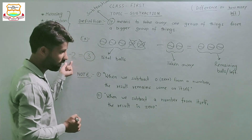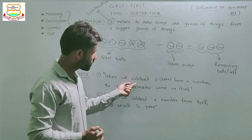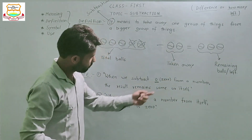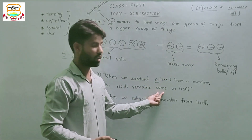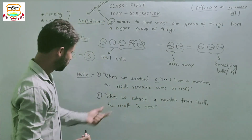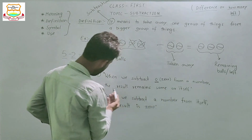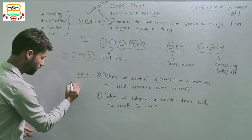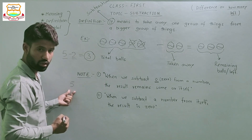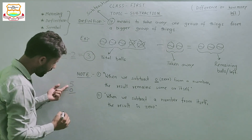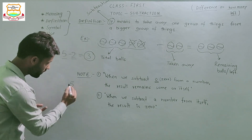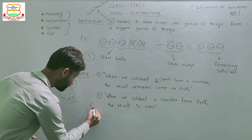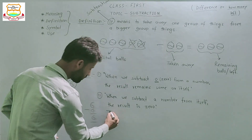The next point is: when we subtract zero from a number, the result remains the same number. For example, five is the number and we subtract zero from five — the result is always five. Another example: six minus zero equals six, and seven minus zero equals seven.